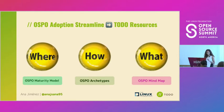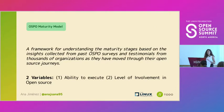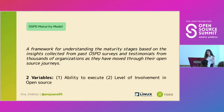First is the OSPO maturity model. Basically, it's a framework to understand the different maturity stages, based on insights collected from past OSPO surveys conducted every single year, as well as testimonials from thousands of organizations that have been moving through their open source journeys. The model has two variables: the ability to execute of that organization, and the level of involvement in open source.